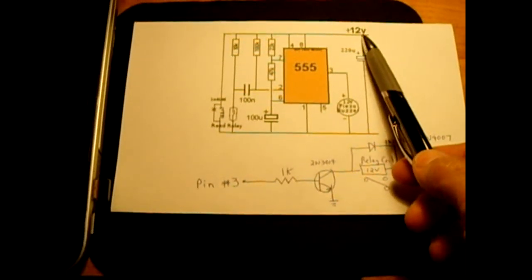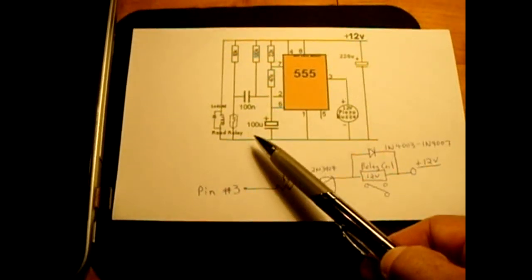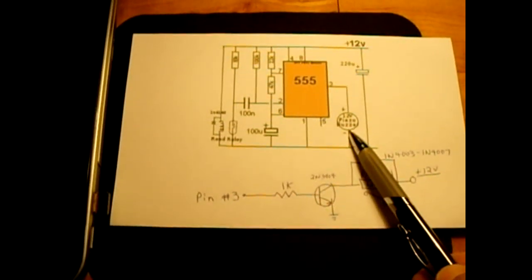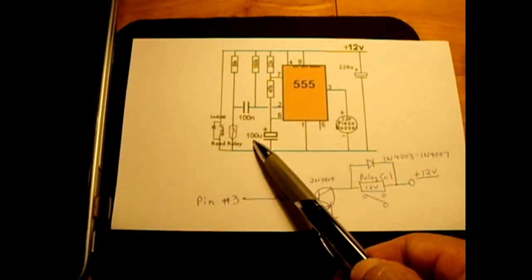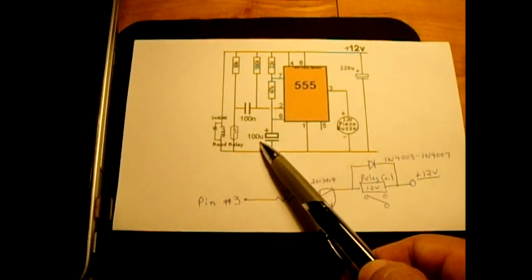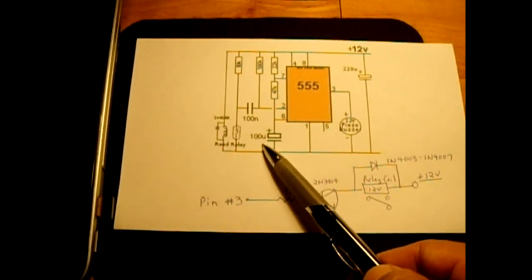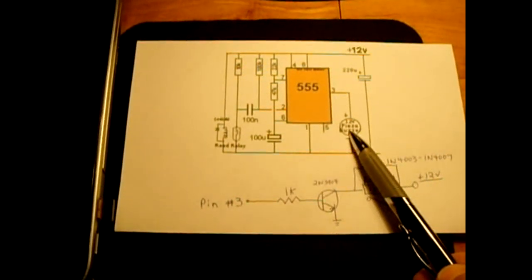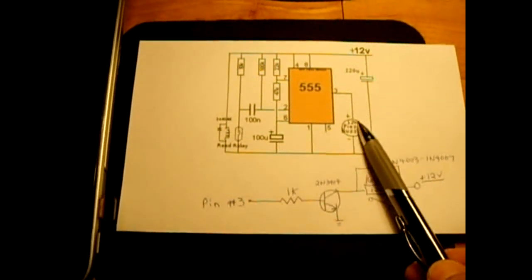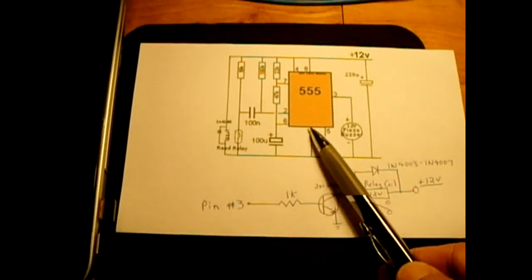Now if you'd like to make the duration longer, say 10 seconds, you could take the 100 microfarad capacitor and replace that with a 200 microfarad. So by doubling that value you'll be getting double the time. So increasing this capacitor increases how many seconds before the circuit will click off again.